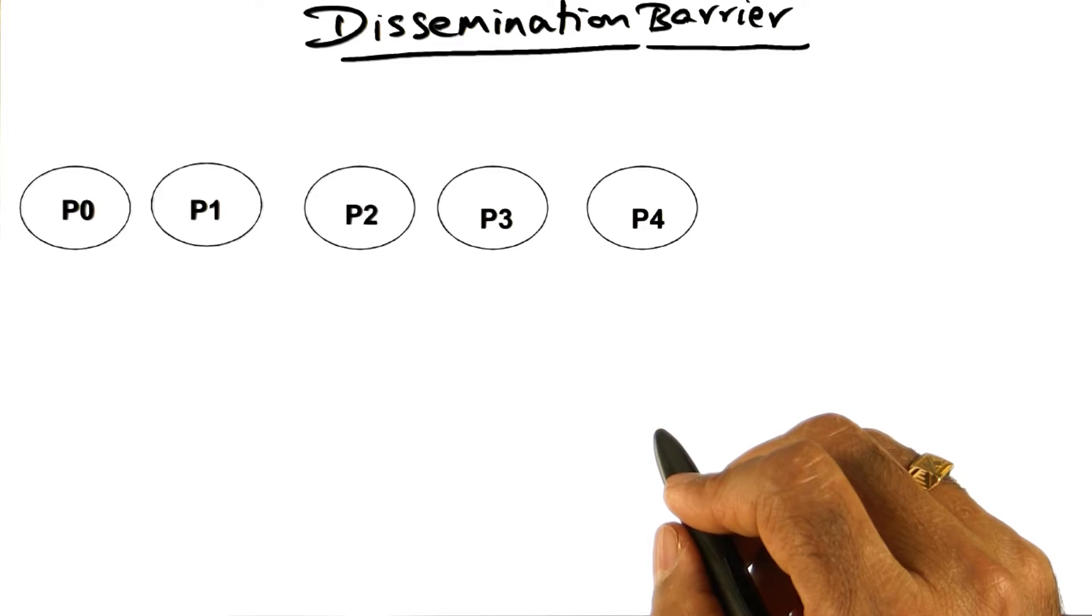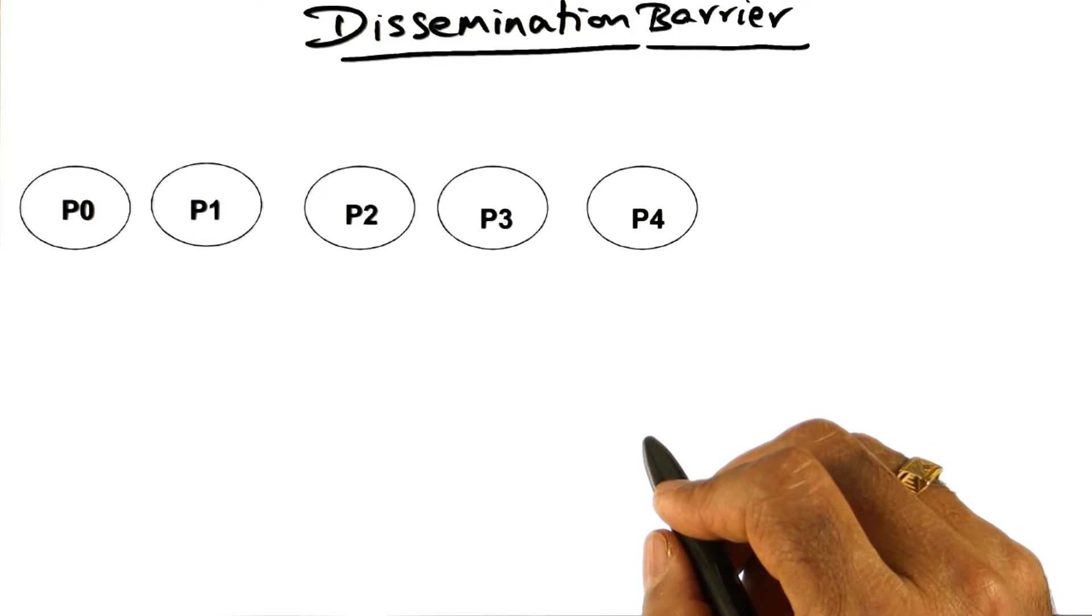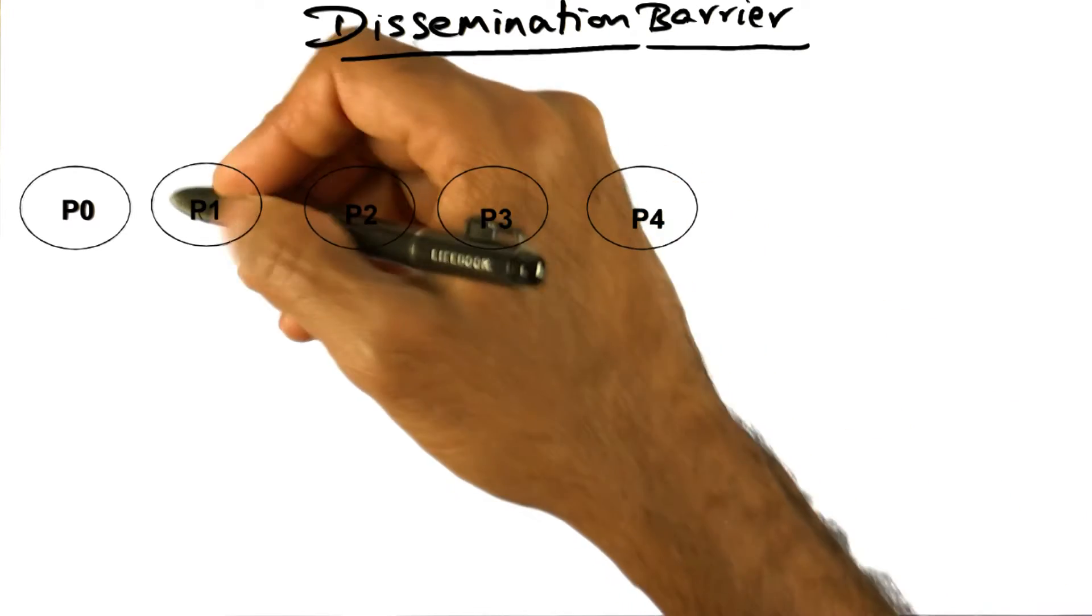What you will see is that it is not pairwise communication as you saw in the tree barriers, the MCS barrier, or the tournament barrier, but it is through information diffusion.